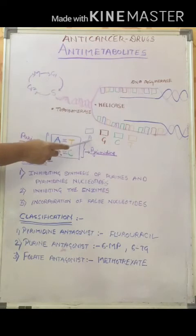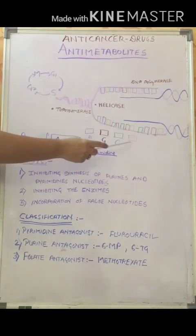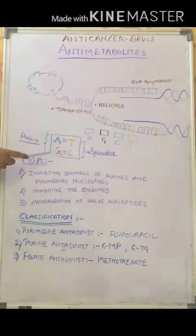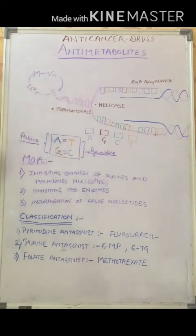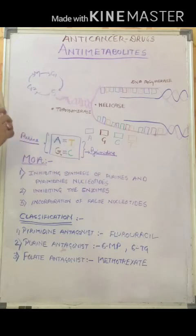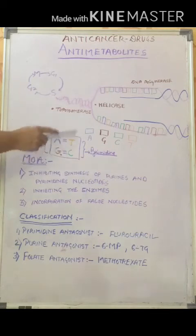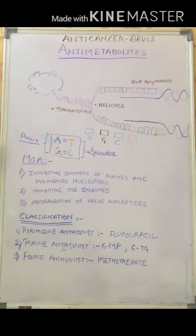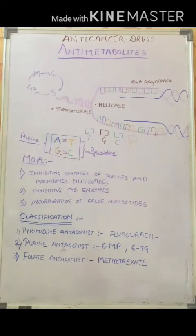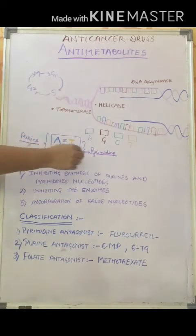The bases are adenine, guanine, cytosine, and thymine. Adenine and guanine are purine nucleotides, and thymine and cytosine are pyrimidine nucleotides. During DNA replication, adenine always forms a bond with thymine and guanine always pairs with cytosine. These nucleotides are synthesized during de novo synthesis of purines and pyrimidines, and anti-metabolites work by inhibiting this synthesis.